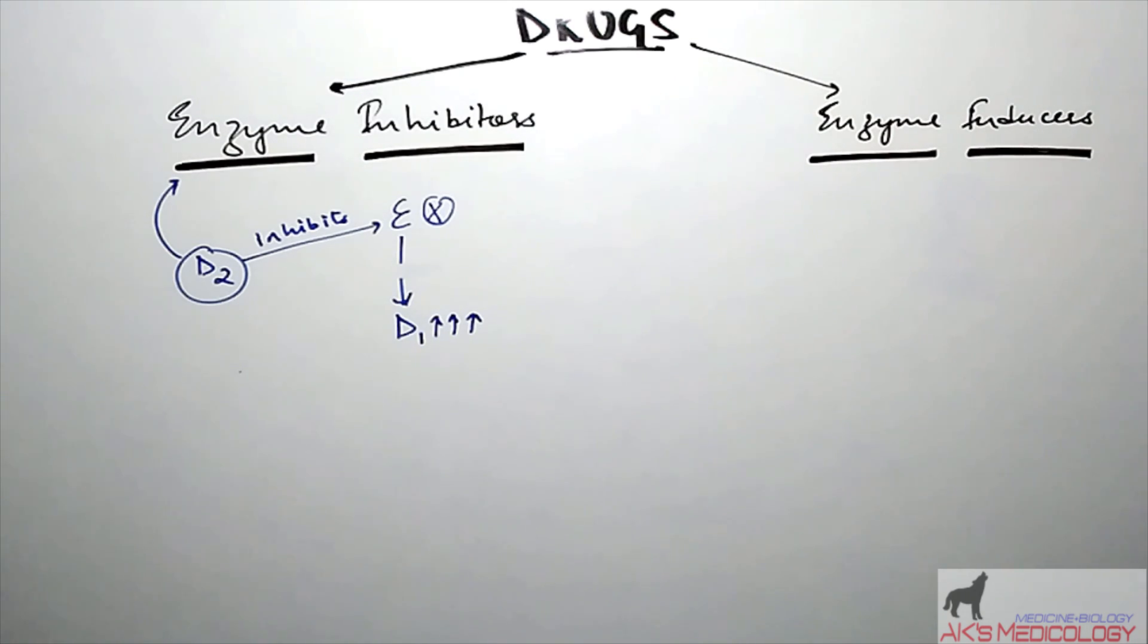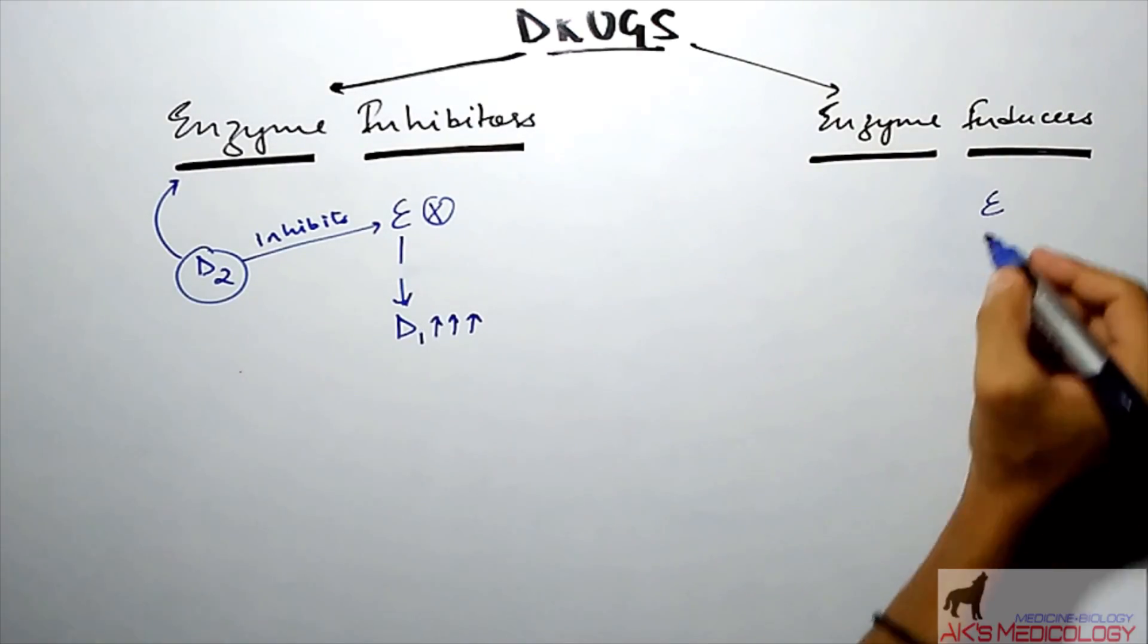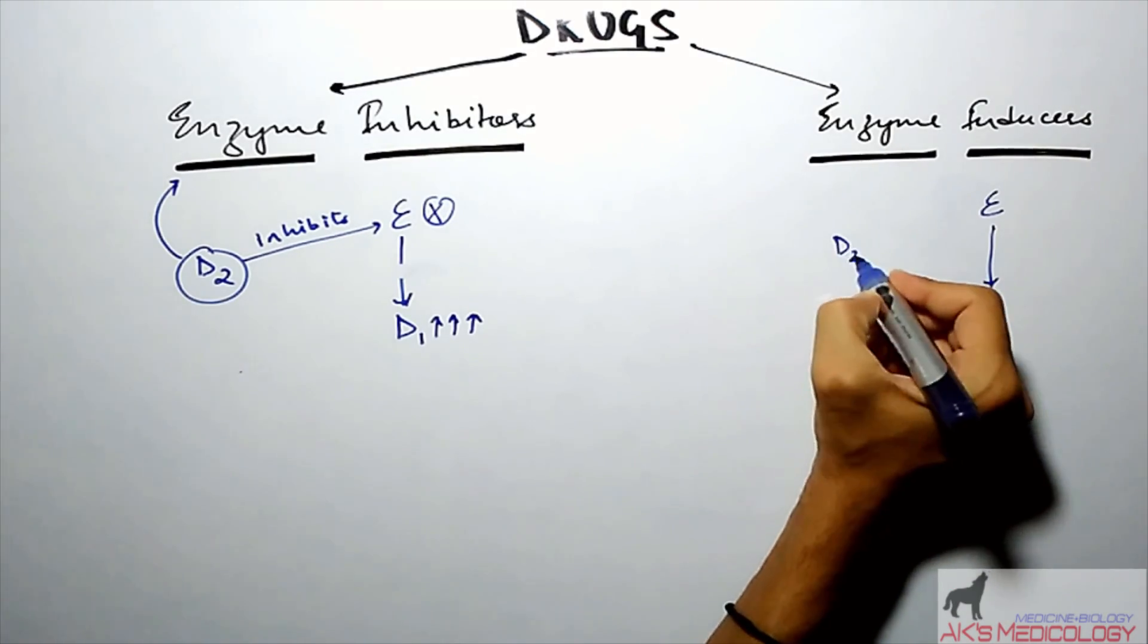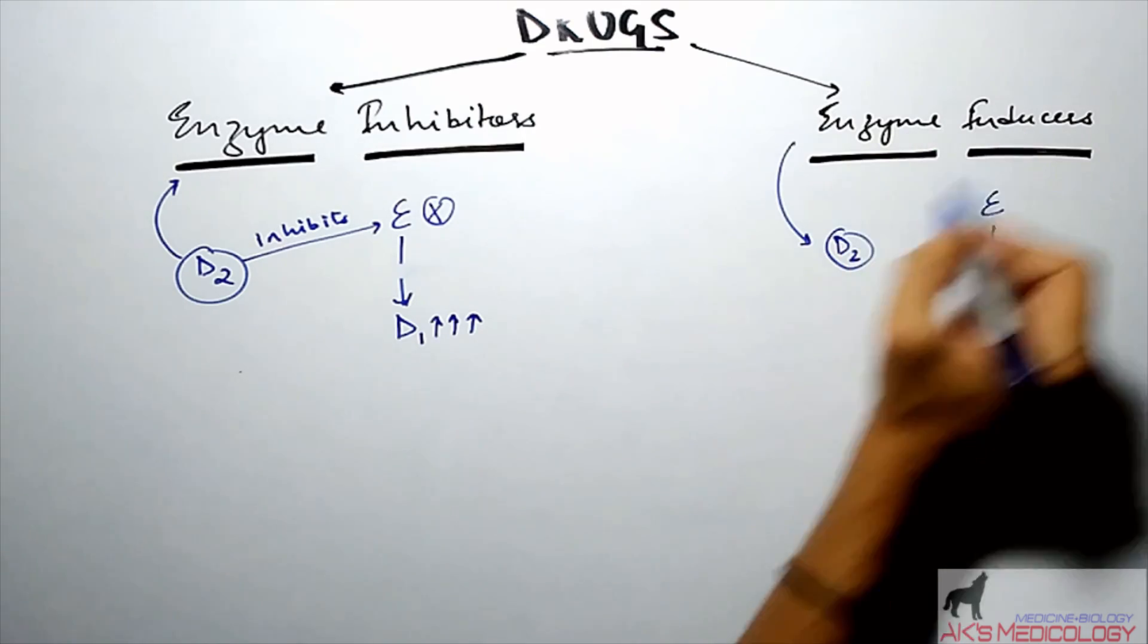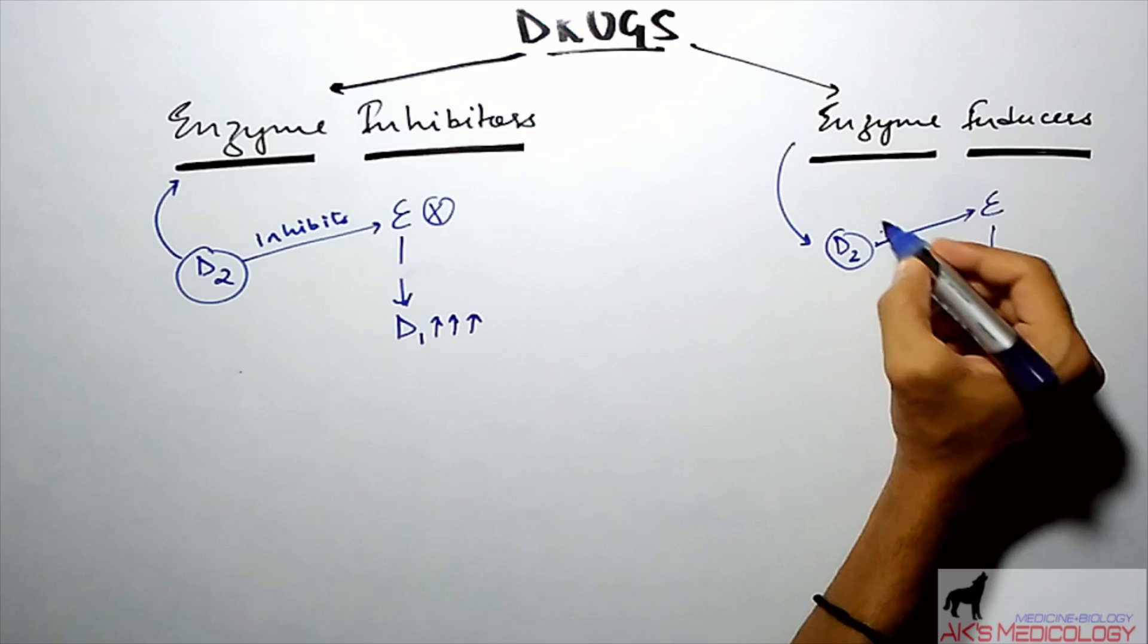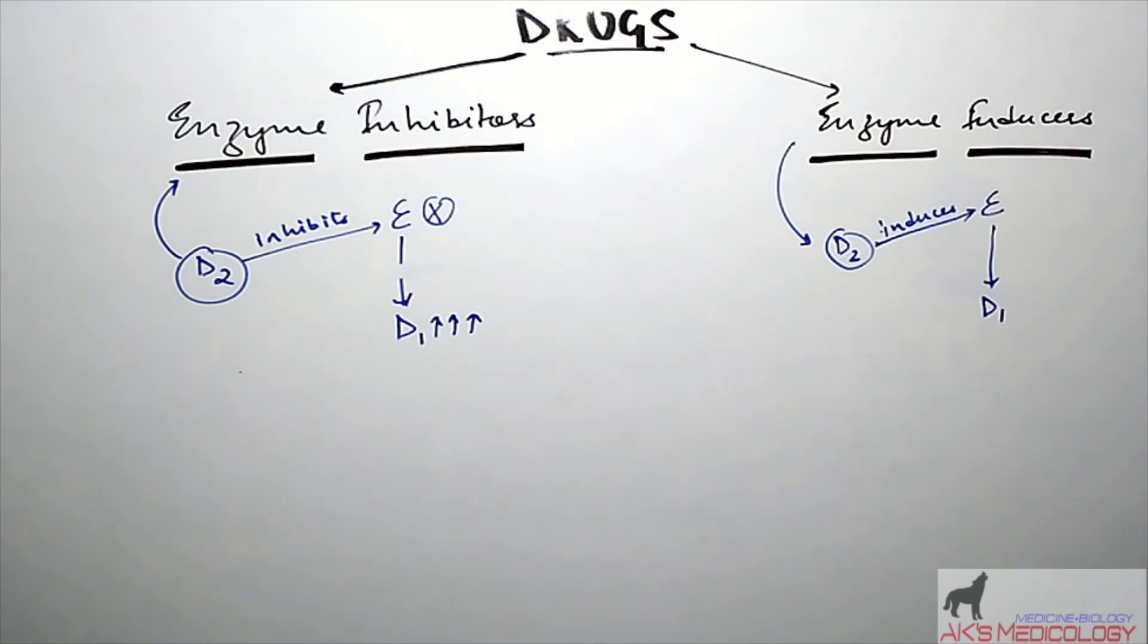On the other hand, enzyme inducers are drugs which induce or enhance the function of an enzyme. For example, let E be the enzyme which acts on a drug D1, and the D2 drug is given which is now the enzyme inducer. This acts on the enzyme E and induces its function, or in other words enhances the function of enzyme E.